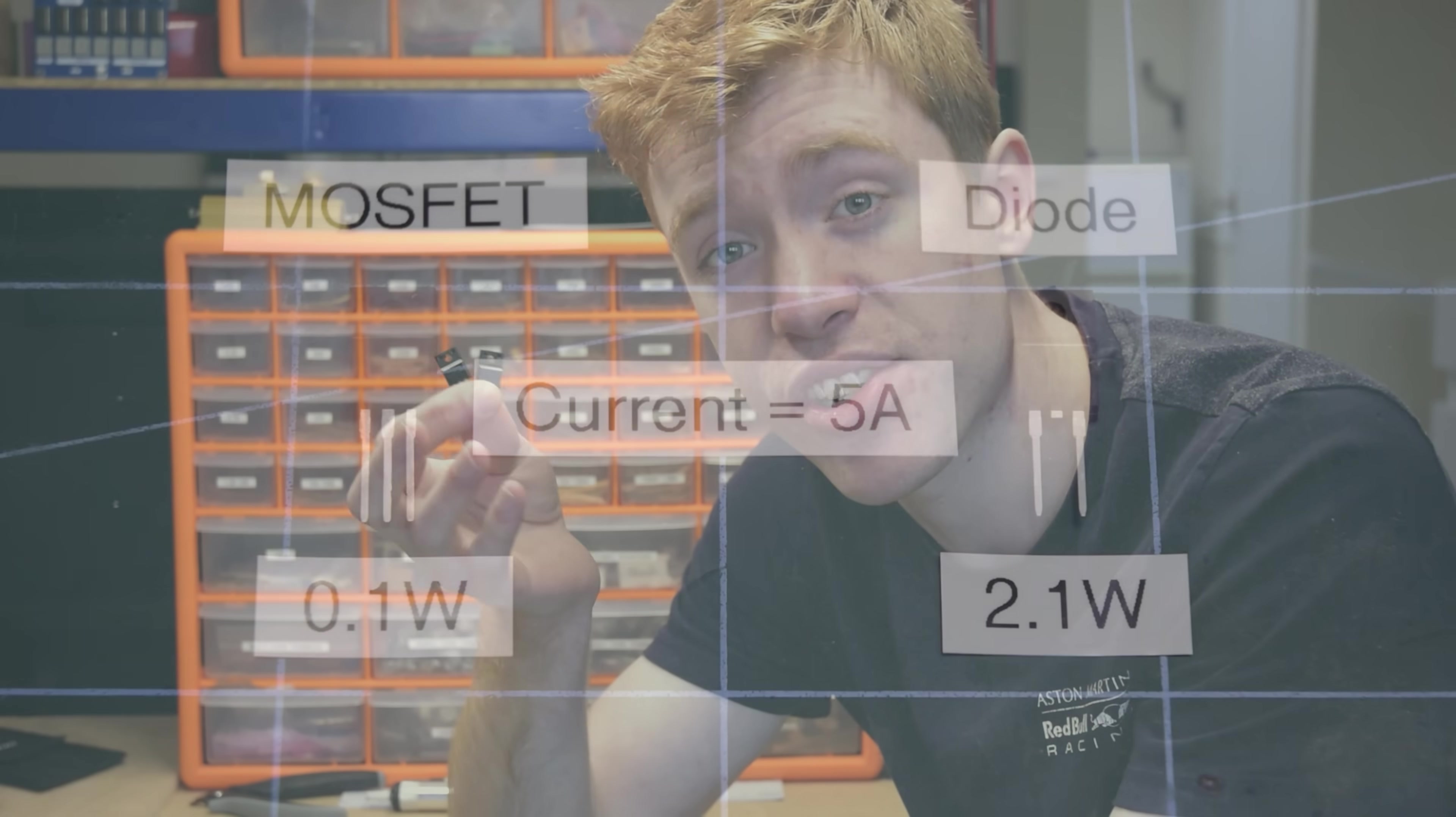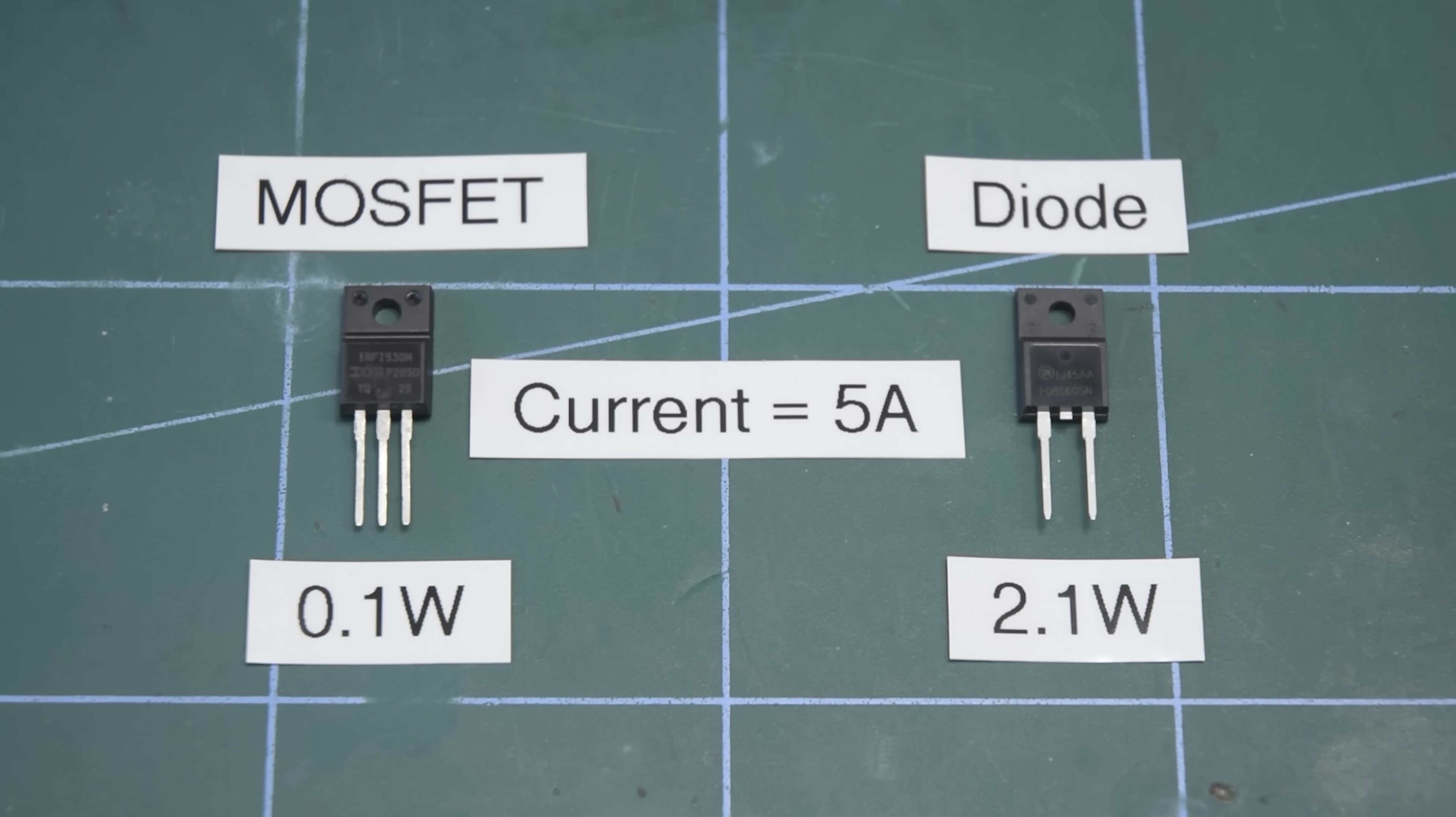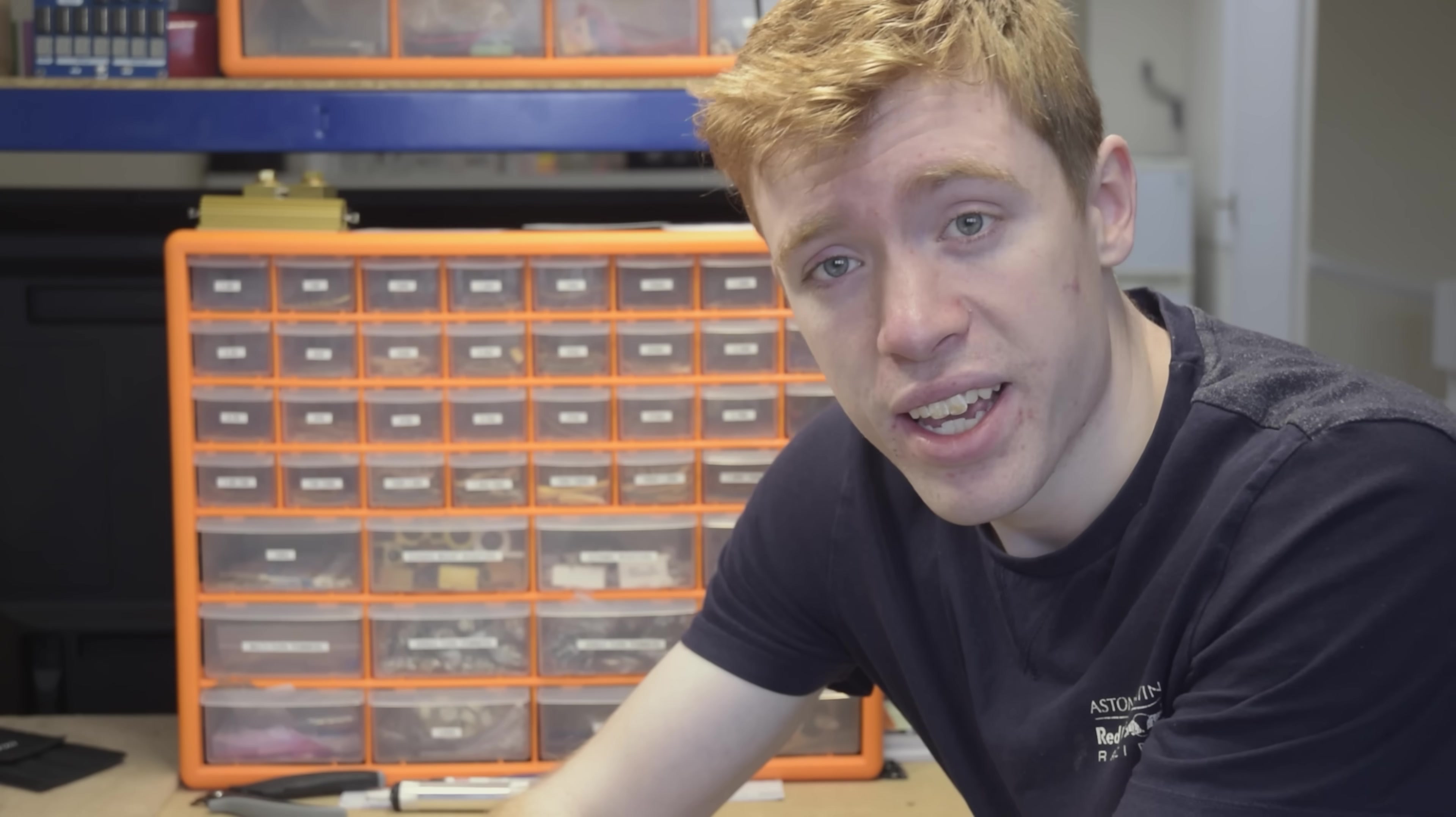Another reason MOSFETs are preferred over diodes is that they have much less conduction loss, especially at high currents, meaning the converter will be more efficient. Finally, and as a bit of a preview for the next video, let's take a look at each of the three converters running and see if they do what we expect them to do.